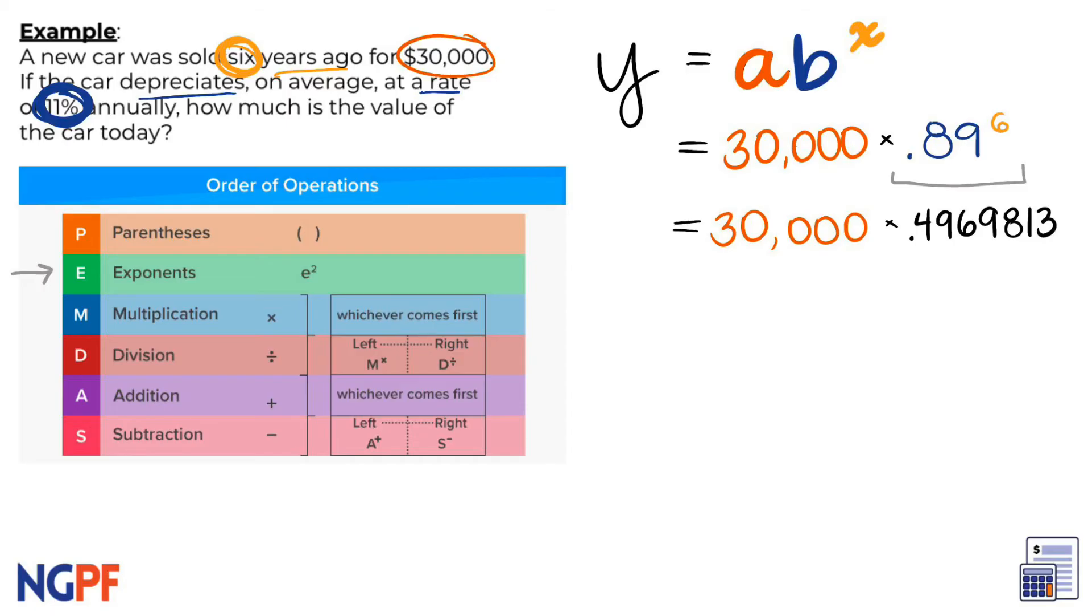In order to get the most accurate value, I will round at the end of my calculations to the nearest whole dollar. The last operation I have is multiplication, so we can multiply 30,000 and .4969813, which gives us 14,909.4387.